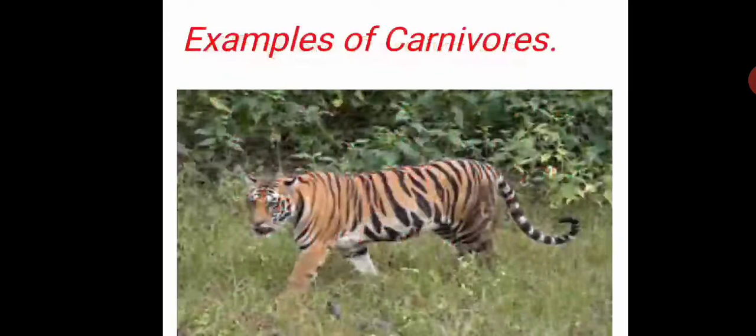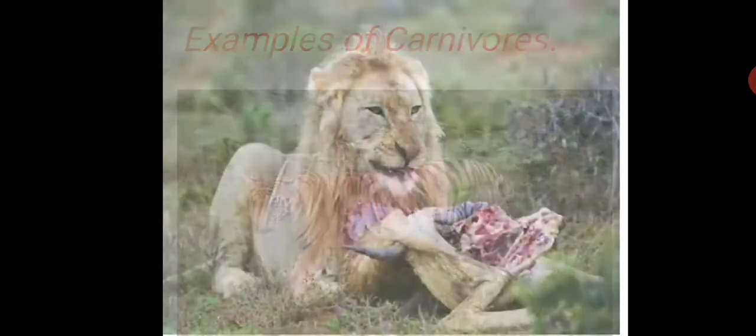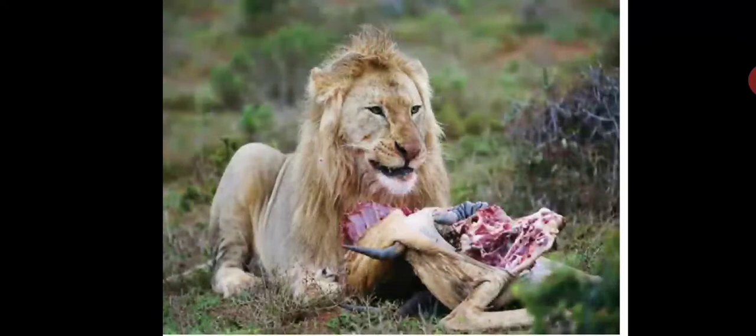Some examples are tiger. Another example is lion. Can you say it? Lion. What is it doing? Eating, feeding on another animal. Lions and tigers are carnivores. They are carnivorous animals. They eat flesh.